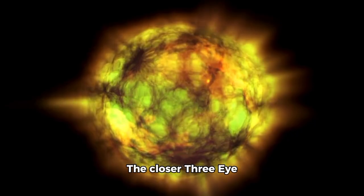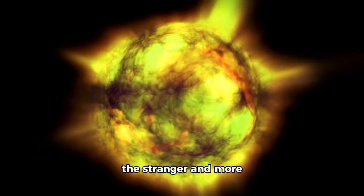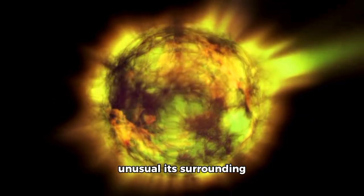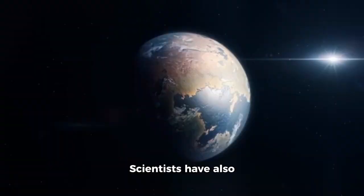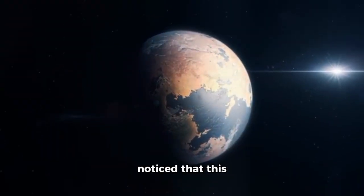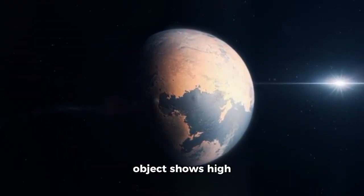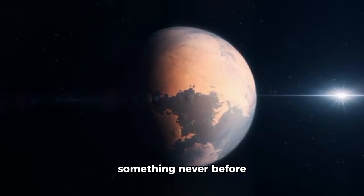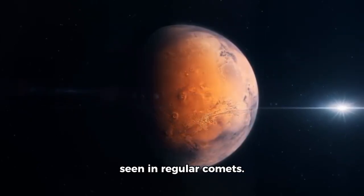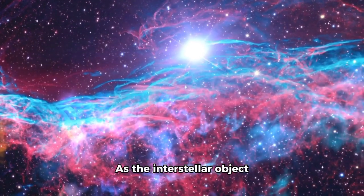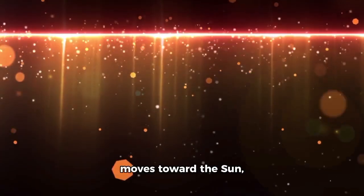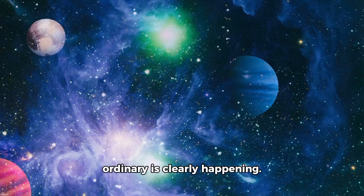The closer 3-Eye Atlas gets to the Sun, the stranger and more unusual its surrounding environment becomes. Scientists have also noticed that this object shows high negative polarization, something never before seen in regular comets. Even the surrounding sunlight is behaving in a very unusual way, unlike anything previously observed. As the interstellar object moves toward the Sun, something out of the ordinary is clearly happening.